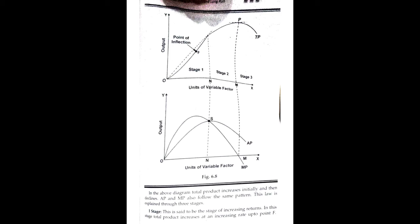This law is explained through three stages. The first stage is the stage of increasing returns. Total product increases at an increasing rate up to point F. Marginal product rises in this stage. From point F onward, total product increases at a diminishing rate and marginal product starts falling but remains positive. Point F is called the point of inflection, where MP is at its maximum. The quantity of fixed factor is too much relative to the variable factor, and the marginal productivity of the fixed factor is said to be negative.